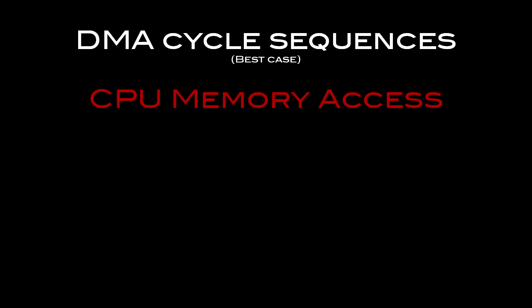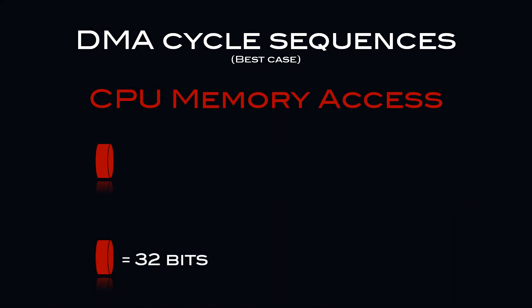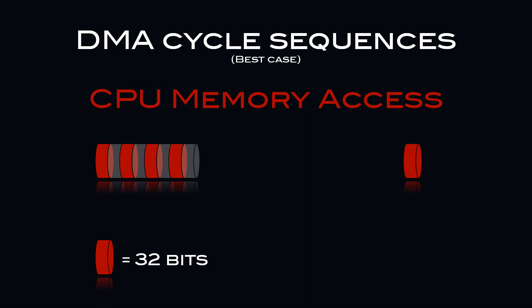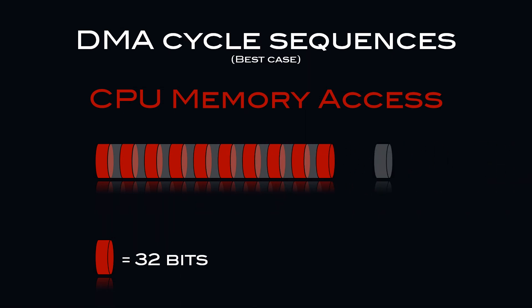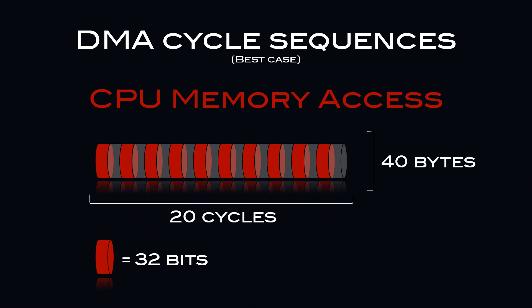So what about the CPU? Well, the 68020 in the A1200 does have a 32-bit path to chip memory. However, it can't access chip memory every cycle — it can only do so every other cycle. Which means that, as you can see in the diagram, its best-case performance will be equal to the blitter: in 20 cycles, it will be able to access 40 bytes of memory.